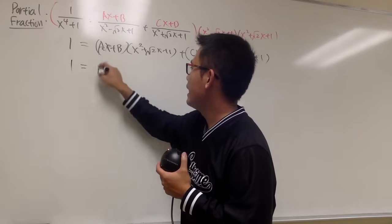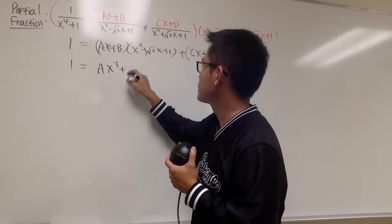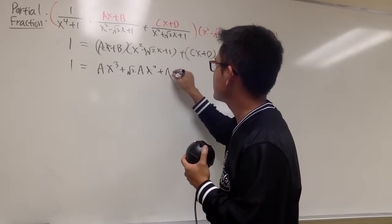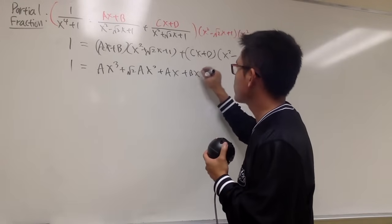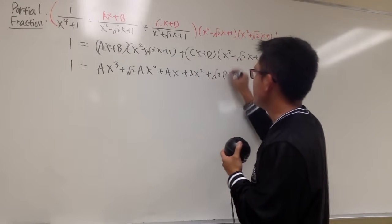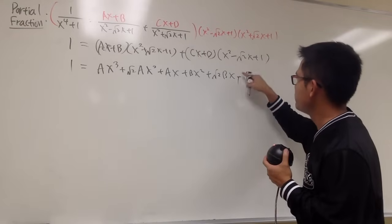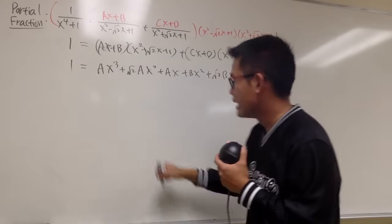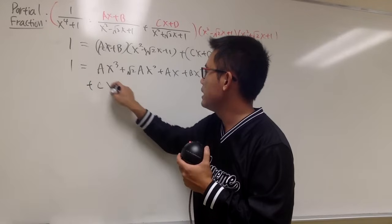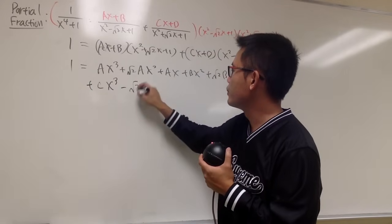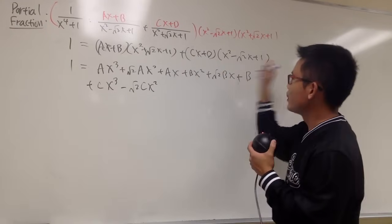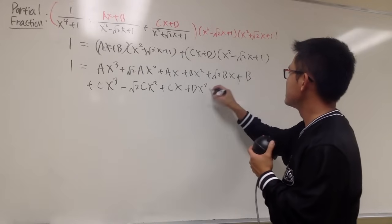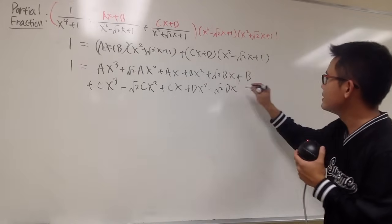Now distribute everything. ax times x squared gives ax cubed; ax times square root of 2x gives plus square root of 2a x squared; ax times 1 is plus ax. Then b times x squared is plus bx squared; b times square root of 2x is plus square root of 2b x; b times 1 is plus b. For the second part: cx cubed, minus square root of 2c x squared, plus cx, plus dx squared, minus square root of 2d x, plus d.